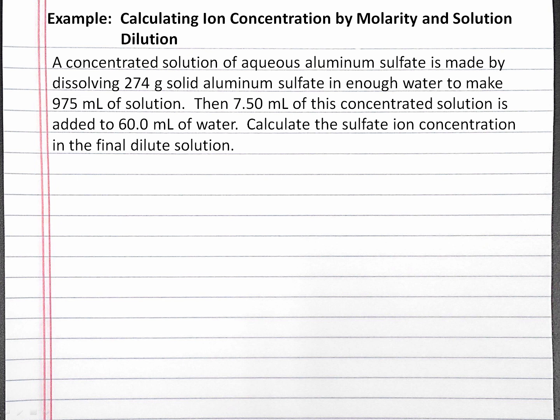In this example problem, we'll calculate a final sulfate ion concentration in a dilute solution given an initial concentrated solution. A concentrated solution of aqueous aluminum sulfate is made by dissolving 274 grams of solid aluminum sulfate in enough water to make 975 milliliters of solution. Then 7.5 milliliters of this concentrated solution is added to 60 milliliters of water. Calculate the sulfate ion concentration in the final dilute solution.